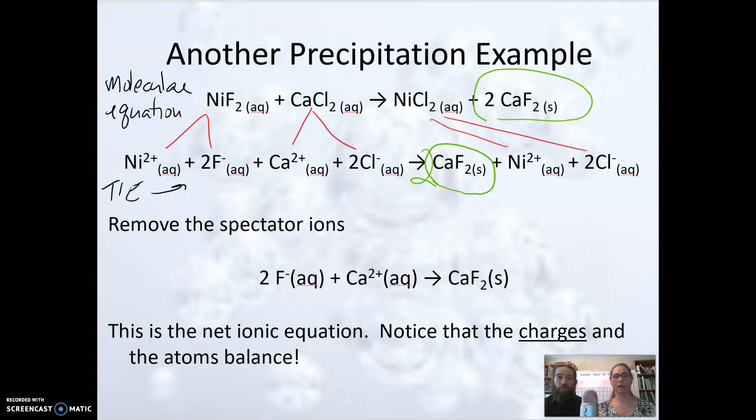Next step would be to remove the spectators or the ions that are the same on both sides of the equation. And I've got the chloride ion and I can cross off the chloride and the nickel. And what I'm left with is I've got the fluoride ion reacting with the calcium ion to produce calcium fluoride solid. This is a net ionic equation.